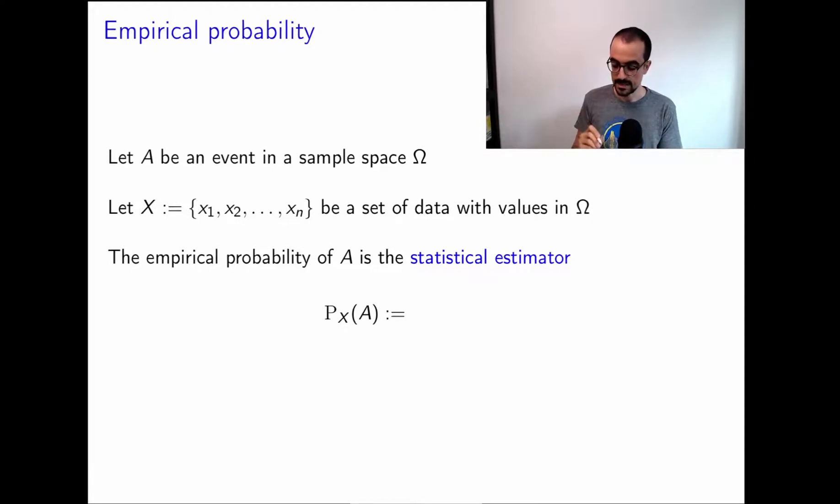So imagine that you have a sample space, omega, that is modeling some uncertain phenomena of interest, and you have defined an event. And now you see some data. This data have values in omega. For example, let's think of the die roll. We're rolling a die. 2, 3, 5, 6, 2, 1, and so on. We roll it n times.